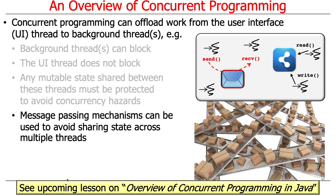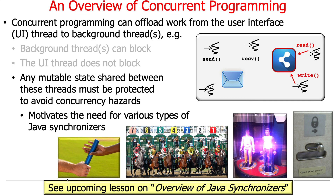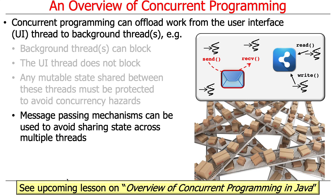Message passing can be used to avoid sharing state between multiple threads. One way to deal with shared mutable state — which is the root of all evil in concurrent programs — is to use synchronizers. The other approach is simply not to share state at all, but instead to pass messages back and forth, so you don't actually share anything. We'll talk about both synchronizers and message passing mechanisms in Java.